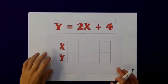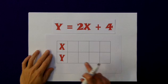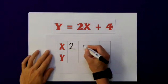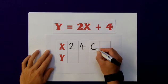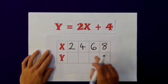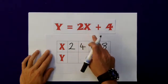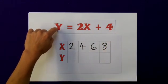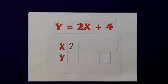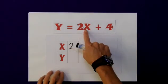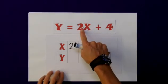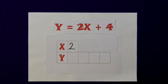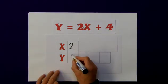So here's my table. I'm going to choose values of x which are fairly easy to start with: 2, 4, 6, and 8. I'm going to substitute each of these in turn into my equation and work out my corresponding value of y. So I'm going to start with 2. Two times 2, remember this is multiplication, 2 times 2 is 4, plus 4 gives me a y value of 8.